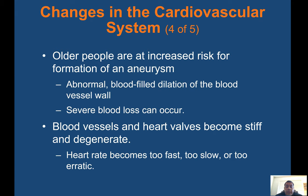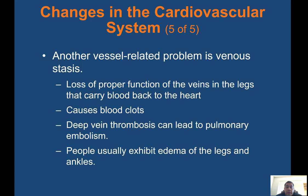Older people are at increased risk of aneurysm formation — an abnormal blood-filled dilation of the blood vessel wall — which can cause severe blood loss. Blood vessels and heart valves become stiff and degenerate. Heart rate can become too fast, too slow, or too erratic. Another vessel-related problem is venous stasis: loss of proper vein function in the legs, which can cause blood clots. Deep vein thrombosis can lead to pulmonary embolism, and people often exhibit edema of the legs and ankles.